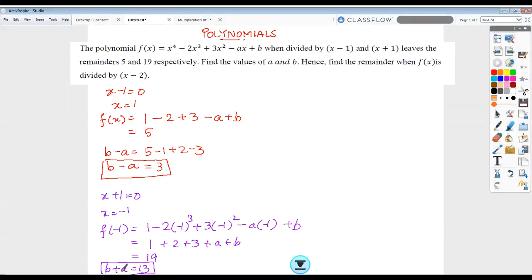These are two equations that I have in b and a. Let's simplify these two. I start with the first one: b minus a equals 3. I can also write b as 3 plus a. This value of b can be substituted in equation 2, which was b plus a equals 13. I can write this b as 3 plus a so that I get an equation in one variable. 2a equals 10, and a comes out to be 5.